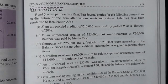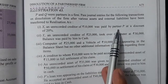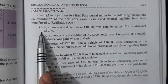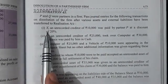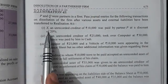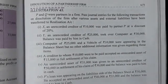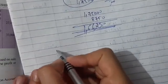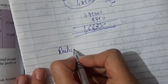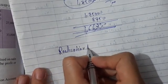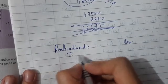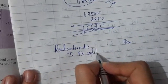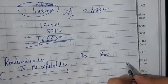Since P is a partner who has taken the firm's liability, his capital should increase. We cannot use individual asset or liability names because everything gets transferred to the realization account when it is created. So we use the name 'Realization'. The journal entry will be: Realization Account Dr. to P's Capital Account — for 8,000 rupees, since P paid 8,000.